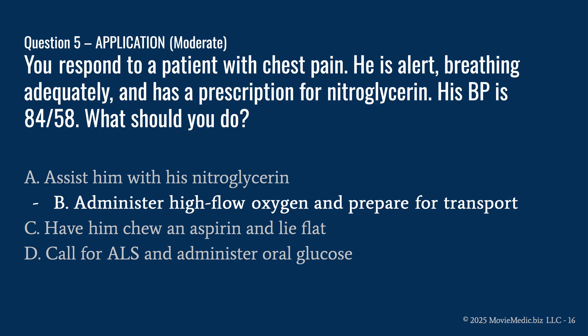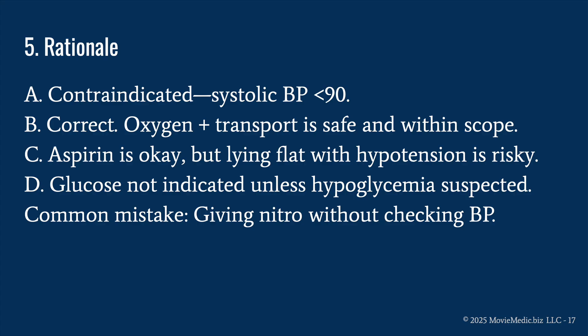The answer is B, administer high flow oxygen and prepare for transport. A is contraindicated because his systolic blood pressure is less than 90. B is correct because oxygen and transport are safe and within scope of practice. C is wrong because aspirin may be okay, but lying flat with hypotension is risky. D is wrong because glucose is not indicated unless hypoglycemia is suspected — nothing in this question indicates low glucose. The common mistake is giving nitro without checking blood pressure or considering contraindications. Know your indications and contraindications.